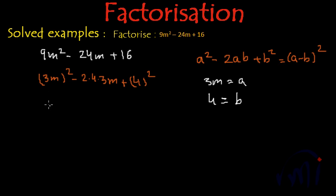this actually becomes a square minus 2ba plus b square. And this ba can actually be written as ab. So this will become 2ab plus b square, which is nothing but a minus b whole square.